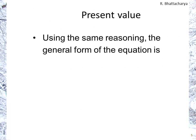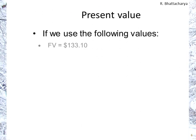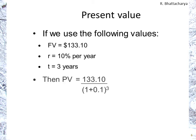Using the same reasoning, we can look at the general form: future value equals present value times 1 plus r to the power of n. Dividing both sides by 1 plus r to the n, that cancels on the right, giving us present value equals future value divided by 1 plus r to the power of n. Using a future value of $133.1, r of 10% per year, and n of three years, present value equals 133.1 over 1.1 cubed, which is $100 — consistent with what we already calculated.